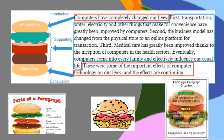Moving on to the second sentence: First, transportation, water, electricity, and other things that make for convenience have greatly been improved by computers. This sentence came right after the topic sentence, and it started with a transitional word, which is first. So this is the first supporting detail. Second, the business model has changed from the physical store to an online platform for a transaction. Here is the second supporting detail, and it started with the transitional word second.